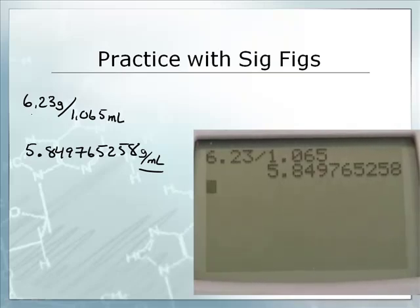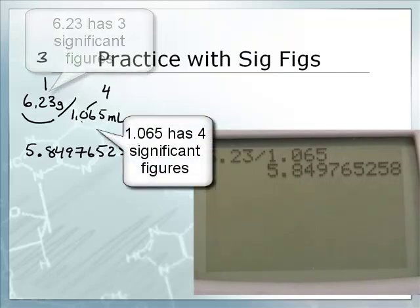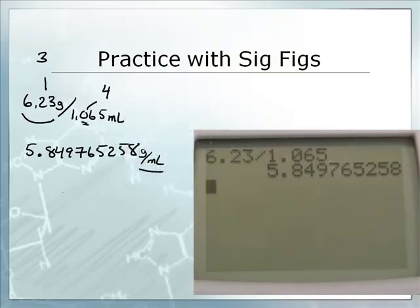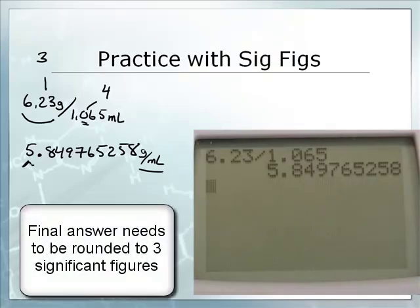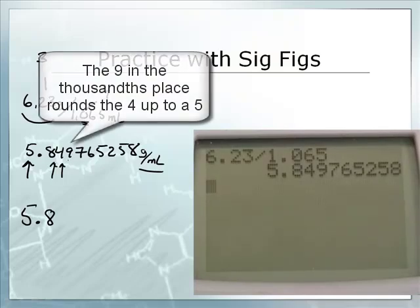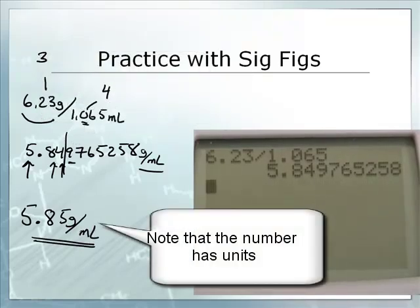Now, we're doing a division problem. So when you divide, you go with the least number of significant figures. So 6.23 has three significant digits. 1.065 has four. That zero right there counts as a captive zero. You're only as good as your least accurate measurement, which would be the three significant digits. So our number needs three significant figures. So the first significant digit would be the five, and then after that would be the eight, and lastly, there would be the four. Now, be careful. Even though we want 5.8, is it going to be a four or is it going to be a five? We have to look at the next digit. The next digit is a nine. That means we're going to round up. So that would be 5.85 grams per milliliters. Do not write the calculator answer. Never.